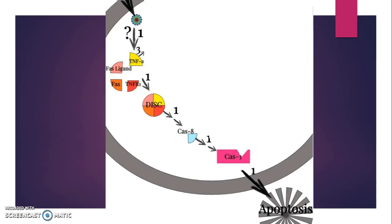TNF-α binds to TNF receptor 1, FAS, and FAS ligand to form DISC. The formation of DISC leads to the activation of caspase 8, which eventually activates caspase 3, the effector of apoptosis.